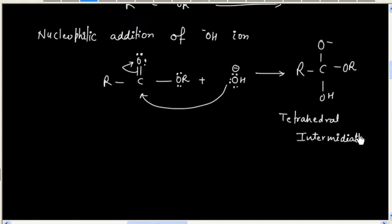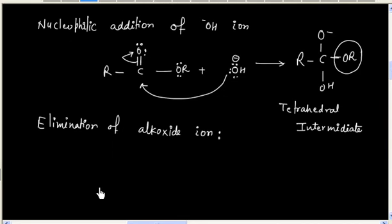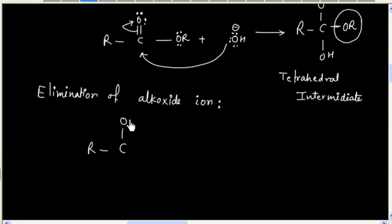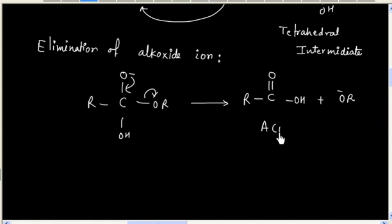In the next step, we have elimination of the alkoxide ion. The OH displaces the OR group, and the OR group gets expelled from the molecule. So we will have the acid plus OR⁻ — that is, acid plus alkoxide ion.